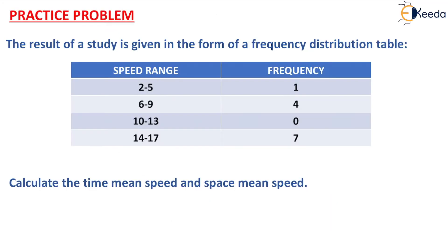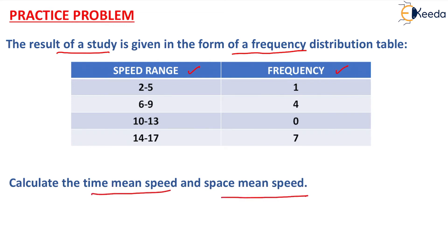The question is given as: the result of a study is given in the form of a frequency distribution table. The speed range is given as 2 to 5, 6 to 9, 10 to 13, and 14 to 17. In the next column, frequency is given as 1, 4, 0, and 7. We have to calculate the time mean speed and space mean speed.